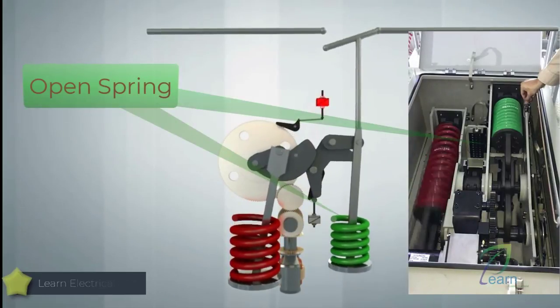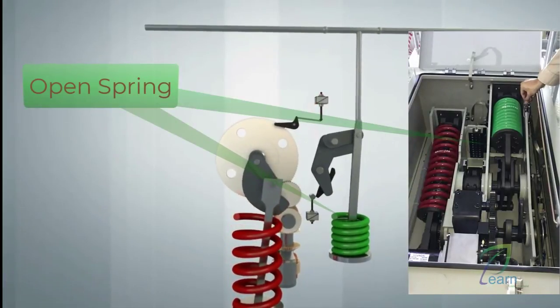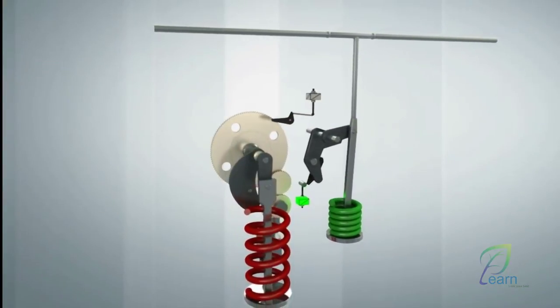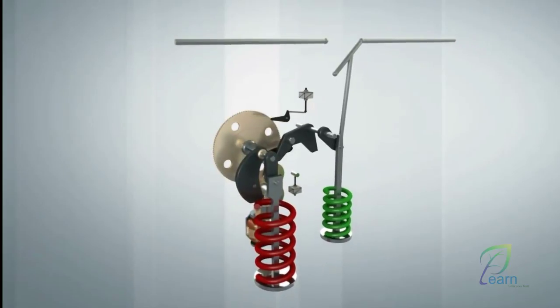The springs are charged by an electric motor. As the closing spring is generally charged through the opening spring, the circuit breaker can always be safely tripped even if the auxiliary power supply fails.